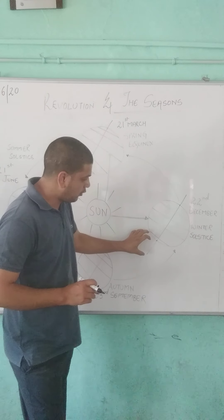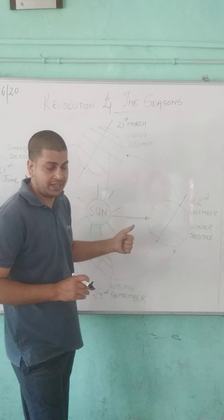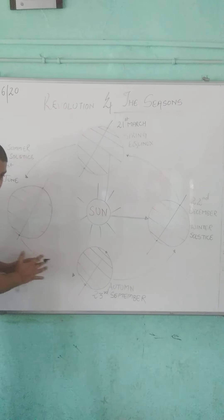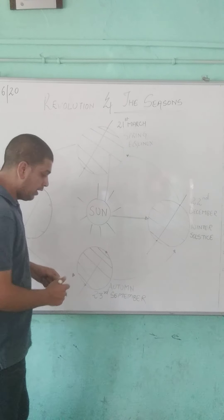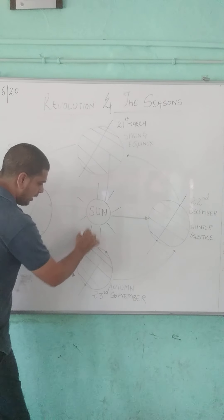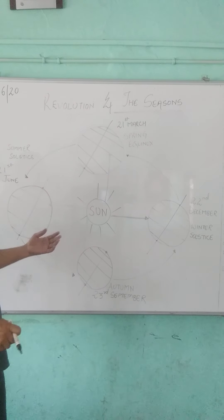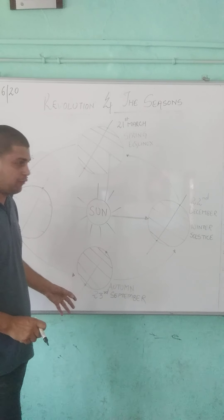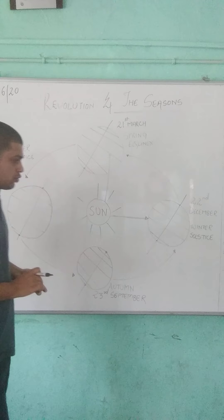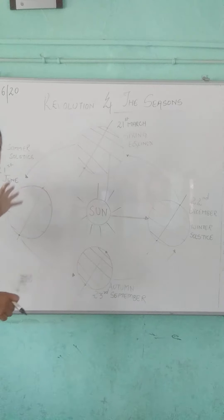During December, the Southern Hemisphere experiences summer and the Northern Hemisphere experiences winter. Then the earth keeps moving around the sun and again reaches a position during 23rd September, where the sun rays fall directly on the equator, making day and night equal once more. This is known as the Autumnal Equinox, while 21st March is known as the Spring Equinox. Because of this, a year is divided into Summer, Winter, Autumn, and Spring seasons — all due to the revolution of the earth.